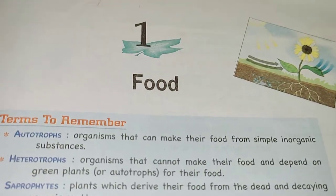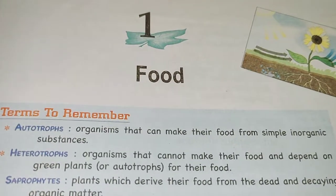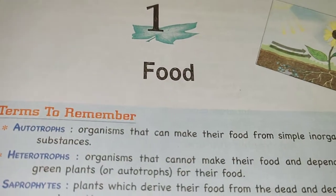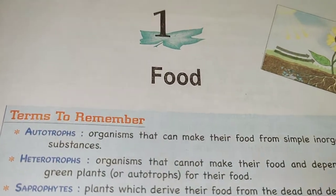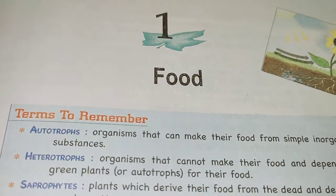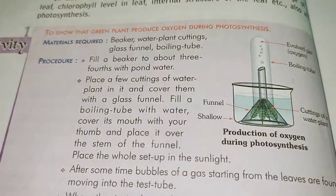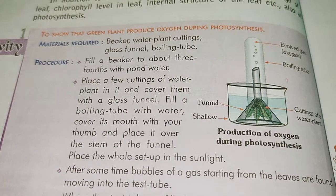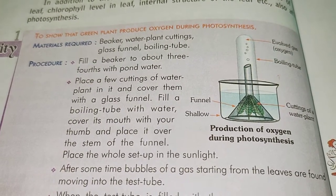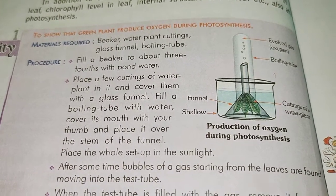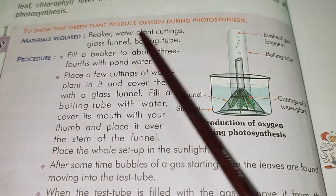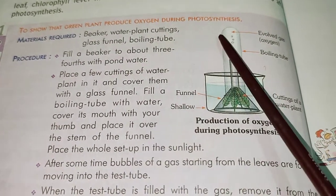Hello Class 7 students. I'm going to start with instructions about practical activities. First, Chapter 1, Activity 1: draw neatly, color, write and describe the procedure for this activity. The aim is to show that green plants produce oxygen during photosynthesis.